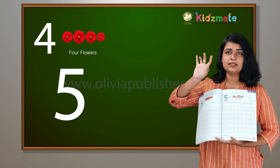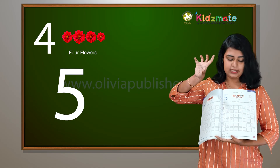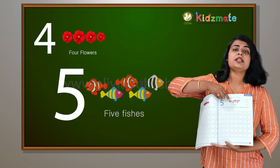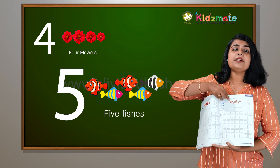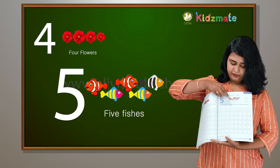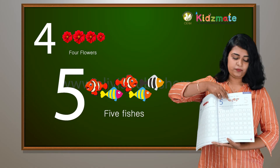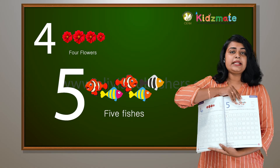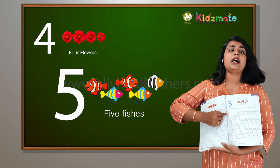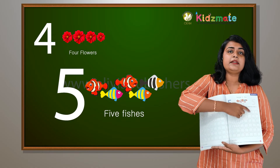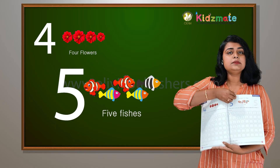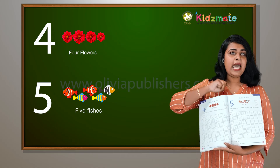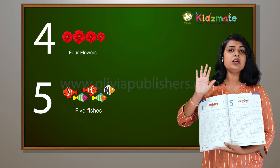How many fingers? 5 fingers. Number 5 — 5 fishes. You have 5 fishes. You will learn this page as well as 5. You will learn the number 4 and 5.